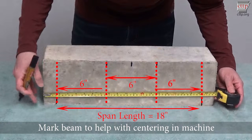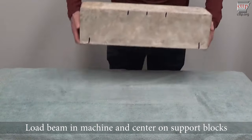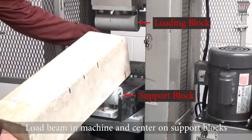For this beam, the span length is 18 inches. Load the beam into the machine and use the marks made to center it on the support blocks.